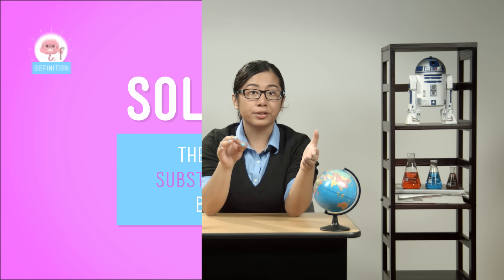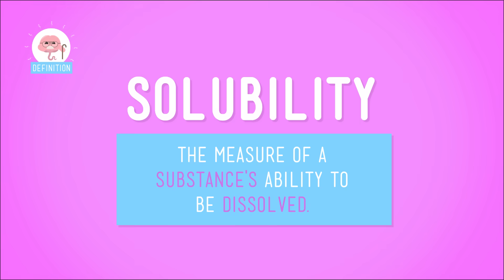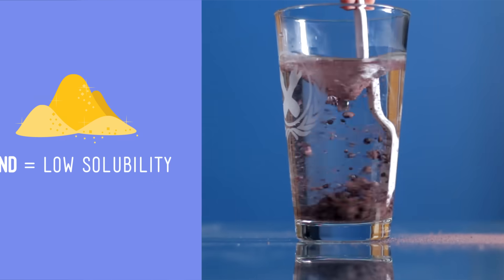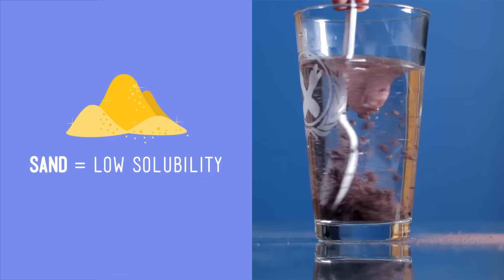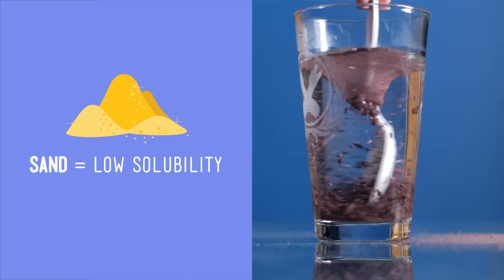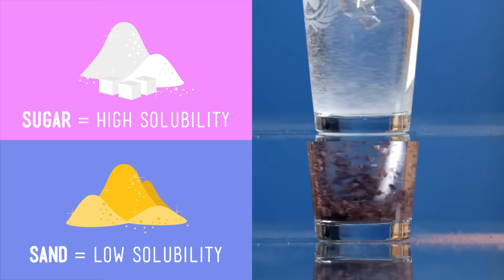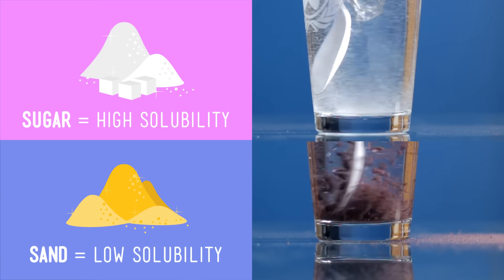But not all substances dissolve easily into other substances. The ability of something to be dissolved is called its solubility. Sand doesn't dissolve in water, for instance, so we say it has low solubility in water. But sugar dissolves pretty easily, so sugar has high solubility in water.